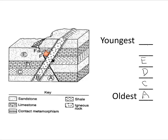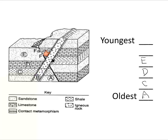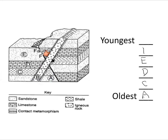Then we have our cross-cutting igneous rock unit — that's B — and we have fault F. The fault F happened next; it offset those sedimentary rock layers. And I know that B, the igneous dike cutting up through there, is the youngest one because I can see that the igneous rock cuts across the fault.